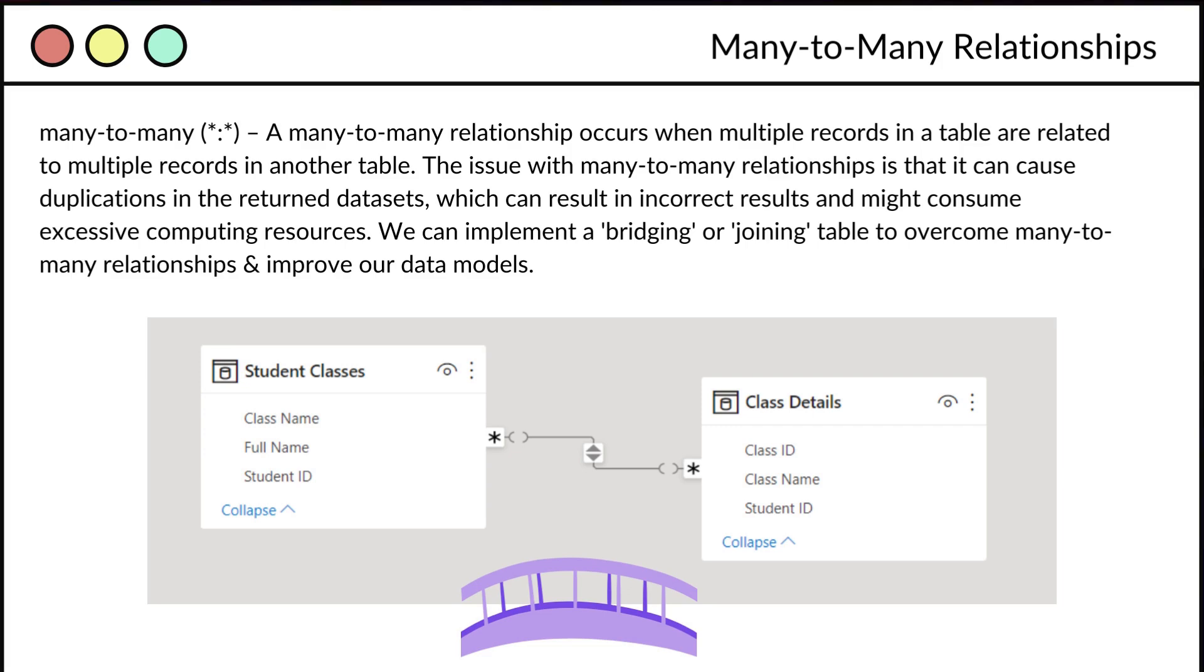And for efficiency, we always want to avoid that because it contributes towards excessive storage, but it can also throw up incorrect results, which is extremely alarming where our first principle of data analysis should be giving correct results. So if we look at this example below, we have student classes and class details. So we want to analyze student data by the classes that they attend. However, if we try to connect this via the student ID, we're going to have many students in a class potentially, and many classes per student. But we could implement what we call a bridging or joining table to overcome this, where we have a separate dimension with the primary key from each table, and we can implement many-to-one or one-to-many relationships.